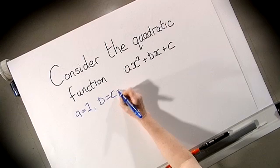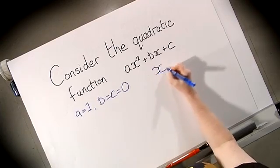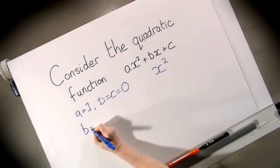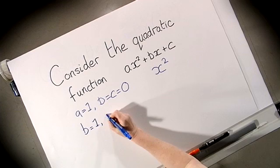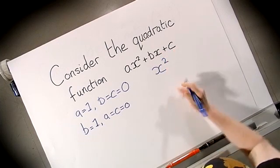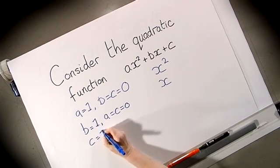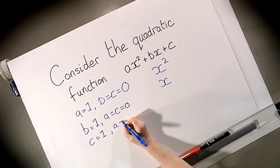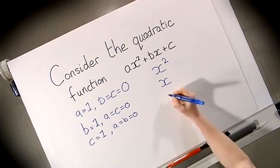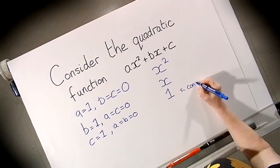While b equals c equals zero. When we do that, we find that this expression simply becomes x². We now do the same again with b, so we set b equal to one and we set a equal to c equal to zero. This time this expression simply becomes x. Do this one more time, so c equals one, a is equal to b equals zero, and this time we simply get one.